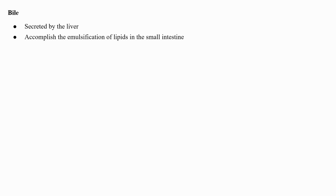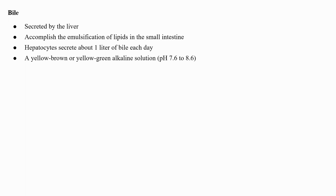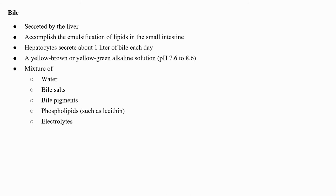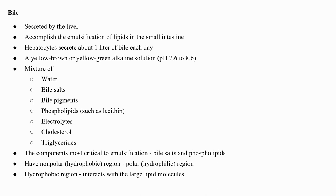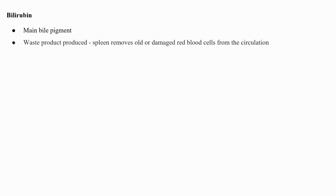Bile is secreted by the liver to accomplish the emulsification of lipids in the small intestine. Hepatocytes secrete about one liter of bile each day — a yellow-brown or yellow-green alkaline solution with pH 7.6 to 8.6. Bile is a mixture of water, bile salts, bile pigments, phospholipids such as lecithin, electrolytes, cholesterol, and triglycerides. The components most critical to emulsification are bile salts and phospholipids, which have a non-polar hydrophobic region as well as a polar hydrophilic region. The hydrophobic region interacts with large lipid molecules whereas the hydrophilic region interacts with the watery chyme in the intestine. Bilirubin, the main bile pigment, is a waste product produced when the spleen removes old or damaged red blood cells from the circulation.